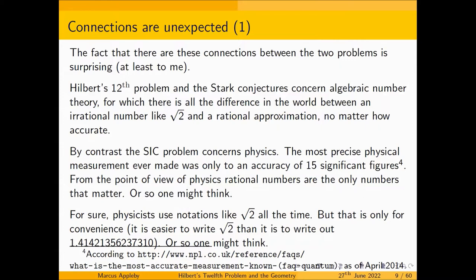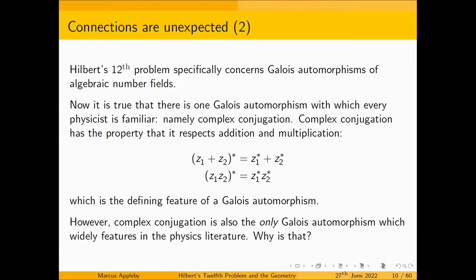The point is that Hilbert's 12th problem and the Stark conjectures concern algebraic number theory, for which there's all the difference in the world between an irrational number like √2 and a rational approximation, no matter how accurate. Whereas by contrast, the SIC problem is a problem of physics. The most precise physical measurement ever made, as I understand it, was to an accuracy of 15 significant figures. So although physicists use notations like √2, that's really just because it's easier to write √2 than a 15-digit decimal expansion. You would think algebraic number theory can't be relevant to physics for that reason.